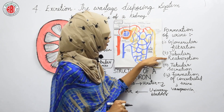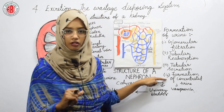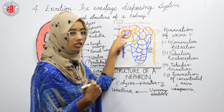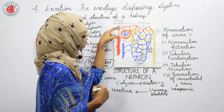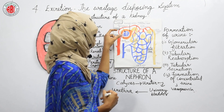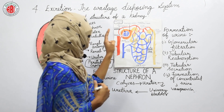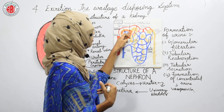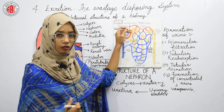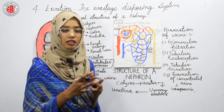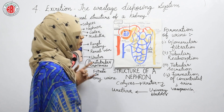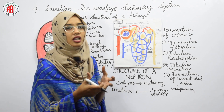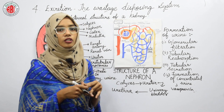The four steps are: glomerular filtration, tubular reabsorption, tubular secretion, and formation of concentrated urine. In glomerular filtration, blood passes through the afferent arteriole into the glomerulus where it becomes primary urine. The primary urine goes to Bowman's capsule, then to the proximal convoluted tubule, where peritubular capillaries reabsorb useful products. About 75% of the filtrate is absorbed in the proximal convoluted tubule.